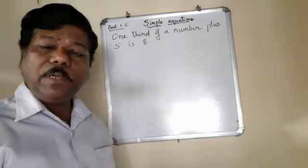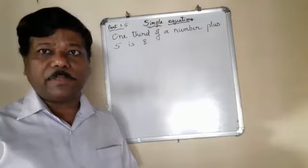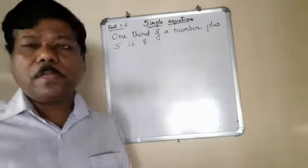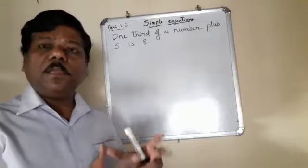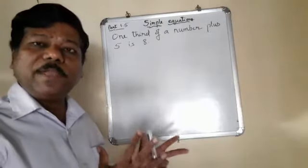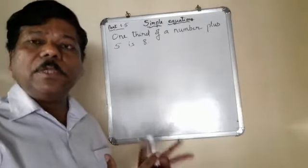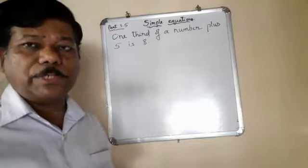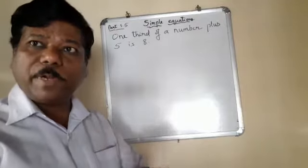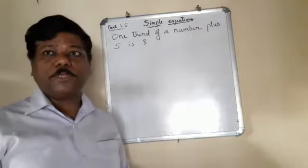And now we will be learning about a transposing method. So transposing means taking a number or a quantity from the left side of the equation to the right side of the equation or vice versa. That is from right side of the equation to the left side of the equation.